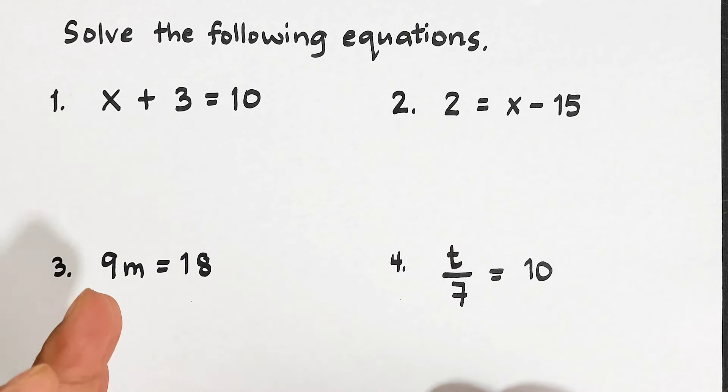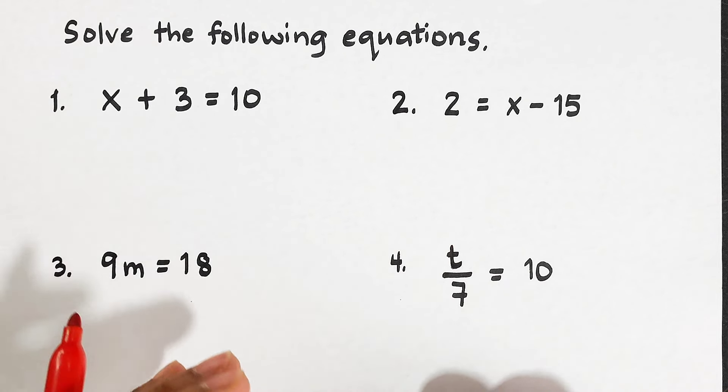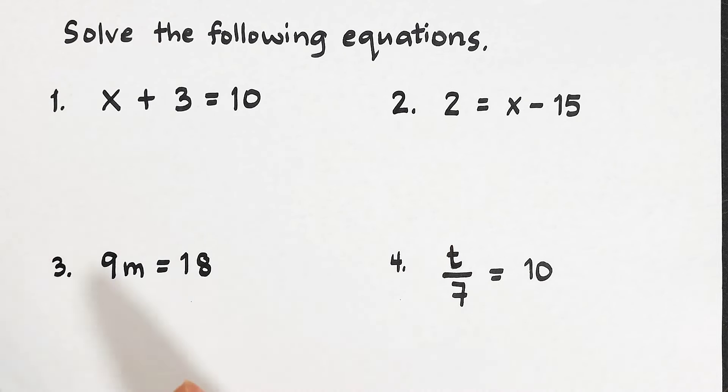In example number one, we have x plus 3 is equal to 10. At first glance of this equation, we can easily figure out what value of x added by 3 equals 10 — the answer is 7. But how do we solve this using the proper steps? First, we need to isolate the variable so it is the only term on its side of the equation, meaning we need to eliminate the other term.